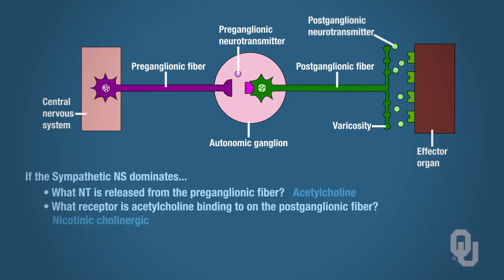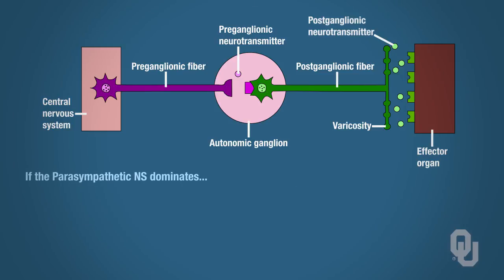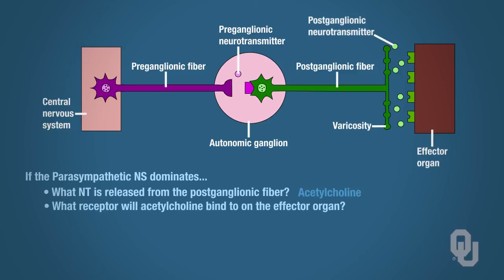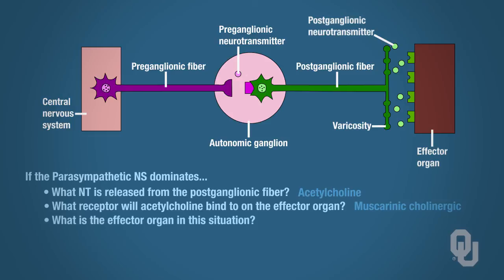Now let's go back to the parasympathetic nervous system dominating. What neurotransmitter is released from the postganglionic fiber? Acetylcholine. What receptor will acetylcholine bind to on the effector? Muscarinic cholinergic. In this case, we're talking about smooth muscle, so what is the effector we are talking about? Remember, effectors are always muscle and glands, so it must be smooth muscle.